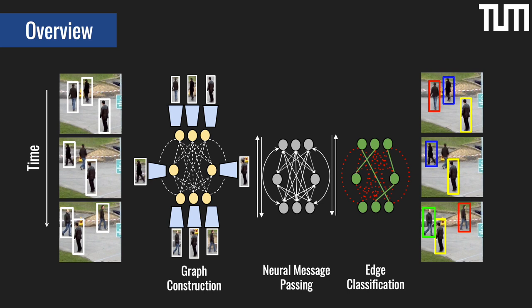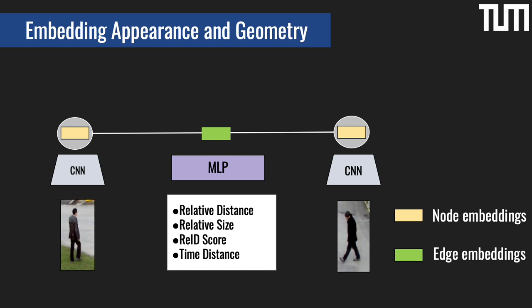Let us now go into more detail for every stage of our pipeline. To encode appearance cues, we take every object detection and fit its RGB patch to a CNN that is shared across the graph, obtaining an initial embedding for every node. For every pair of detections, we consider a set of basic coordinate-based features — time distance and appearance similarity — to build a feature vector that we then feed to an MLP to obtain an initial edge embedding.